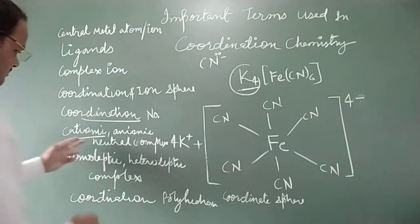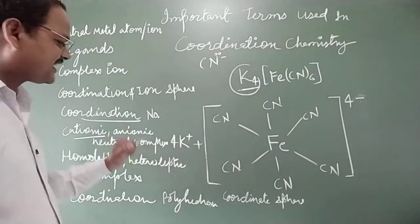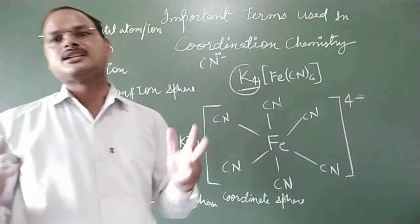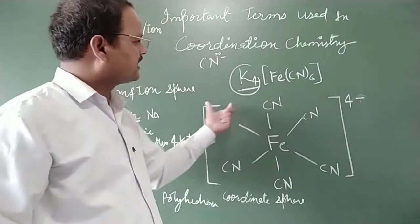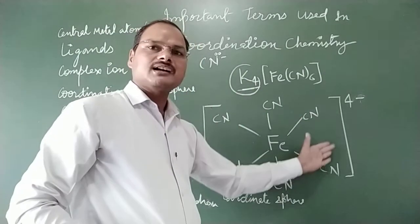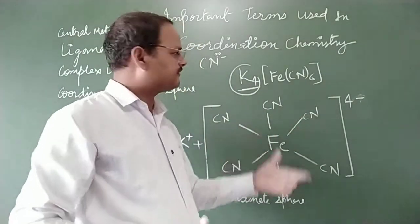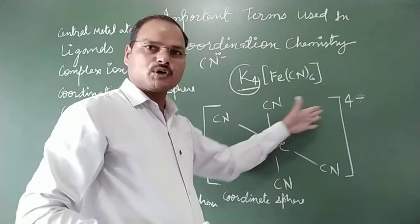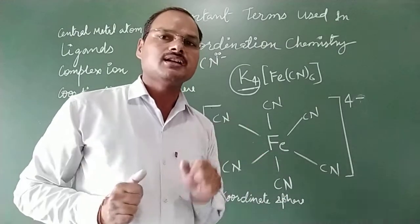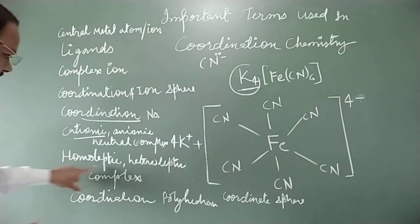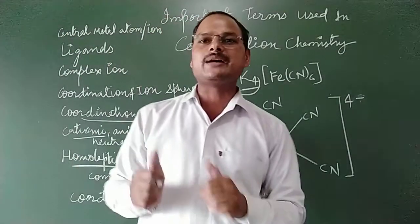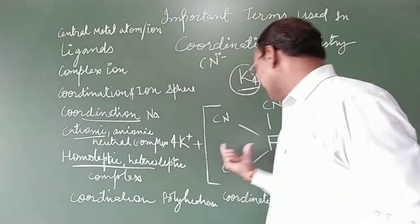The complex part may be positively charged — that is a cationic complex — or it may be negatively charged — an anionic complex — or in some cases it may be neutral, which is known as a neutral complex. Here you can see this part is positively charged, so it is a cationic complex.